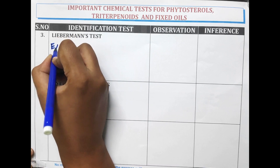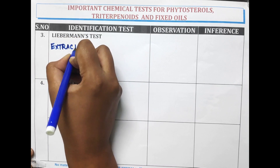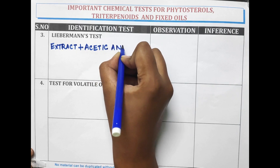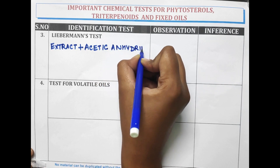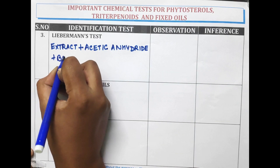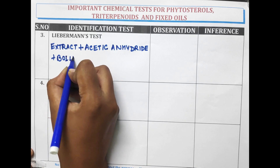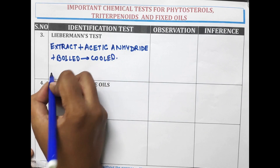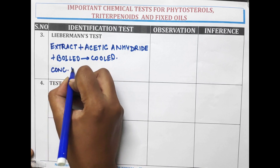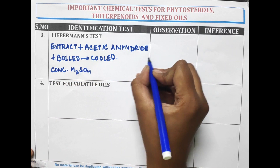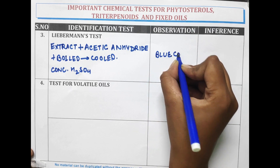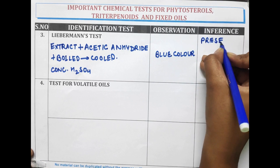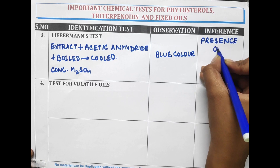Another test is Lieberman's test. In Lieberman's test, the extract is treated with acetic anhydride, then boiled and cooled. After cooling of the solution, concentrated H2SO4 is added. A blue colour is observed, which indicates the presence of steroids.